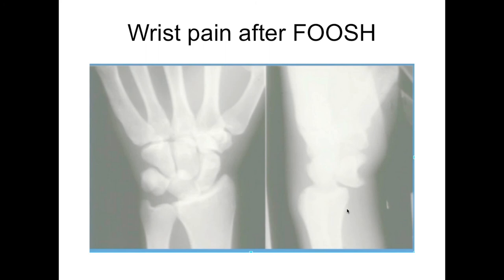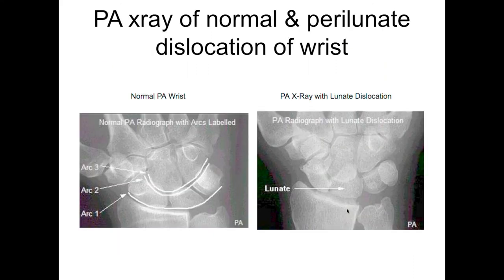What fracture is this? Look at the lateral view — where is the lunate? It's the spilled teacup sign. That cup tipped over means this is a lunate dislocation. On the AP view, the lunate is described as triangular and is now overlapping the capitate. That's a clear sign you have a perilunate or lunate dislocation.